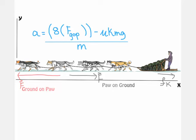Here, I rearranged for the acceleration that we're looking for. Notice that I have put an 8 in front of the forward motion of the dogs. This is because we have 8 dogs.